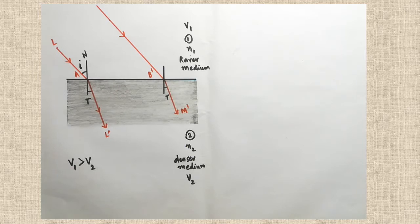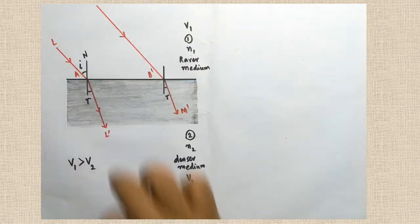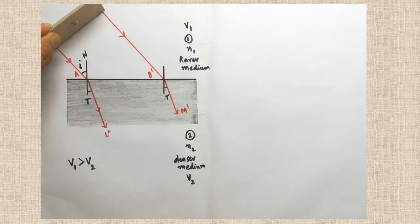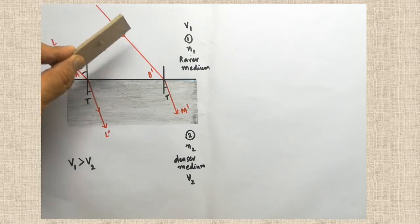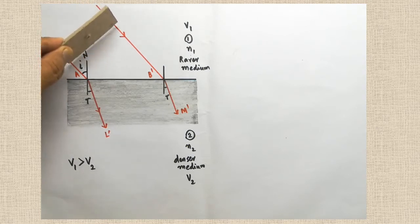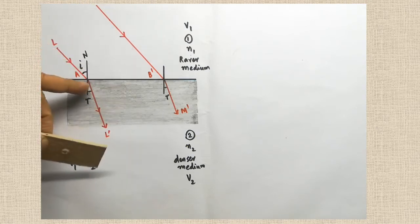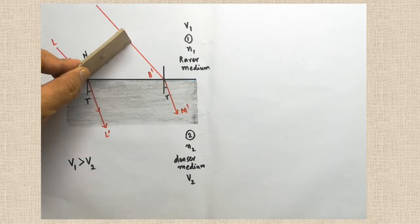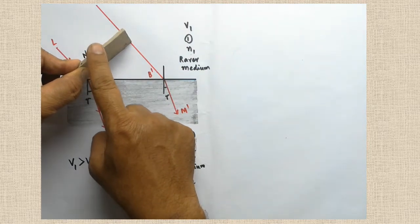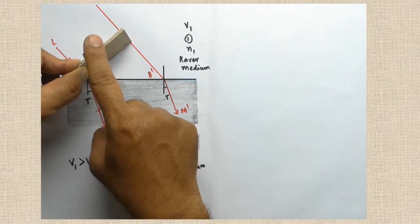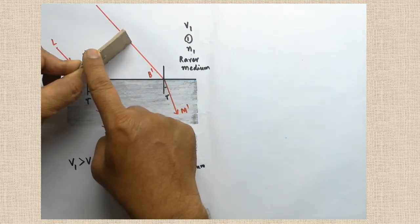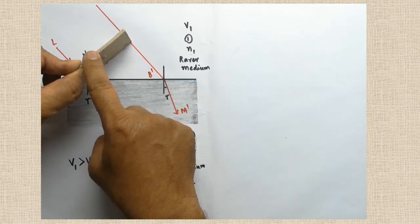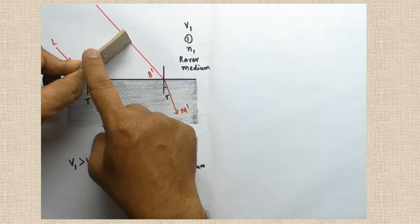Already I have explained how to draw the wavefront for the incident ray. When the two rays are traveling, the wavefront should be drawn perpendicular to the rays. These are all plane wavefronts drawn for the parallel rays — wavefront 1, wavefront 2, wavefront 3, wavefront 4 — like this for each point we can draw. When the ray touches the surface, this is the wavefront drawn for the incident ray, called the incident plane wavefront.